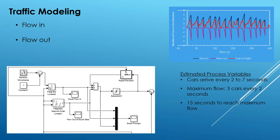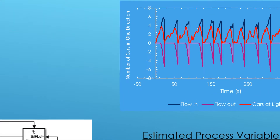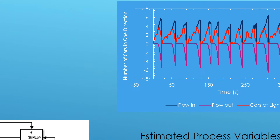You can see in this graph that the black line represents the flow of cars coming in — a ramp with some disturbance. Once the light turns green and hits a certain point, cars start to flow out, shown by the purple line, which gradually increases until it hits the maximum value. The net result is cars building up at the intersection until the light turns green, then decreasing until it hits zero, at which point it turns red and starts to climb again.